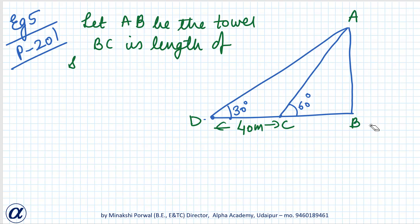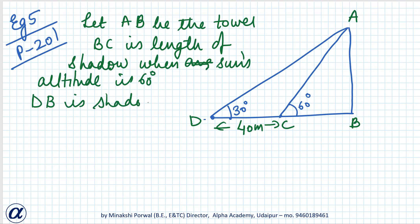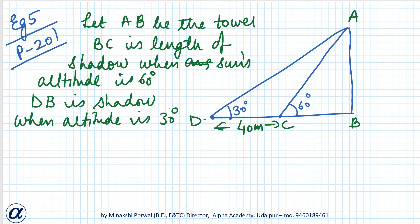AB is the tower. Its height is not given. The shadow length difference is what's given. So AB is the tower, BC is the length of shadow when sun's altitude is 60 degrees, and DB is the shadow when sun's altitude is 30 degrees. We have to find the height of the tower — this h is unknown.